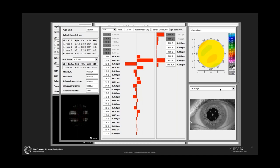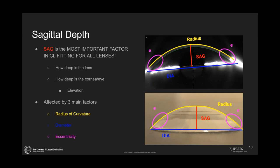The other cool thing on this is there's an IR image. If you change the IR image, you can actually look at the vessels going through on the scleral lens haptic and take a look at the impingement because it highlights it with the infrared — a very useful aspect. Now, as we all know, everything in contact lens fitting comes down to sagittal depth. It's the single most important factor in any type of contact lens fitting. You're looking at how deep is the lens, how deep is the eye and the elevation. That's exactly what corneal tomography gives you. It's affected by three main factors: radius of curvature, diameter, and eccentricity — all data you can get from the Pentacam.